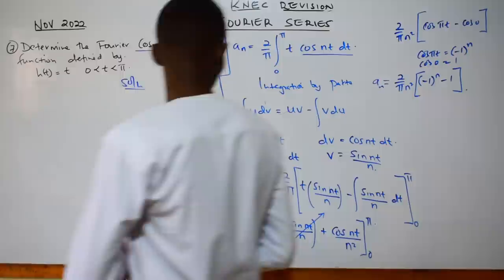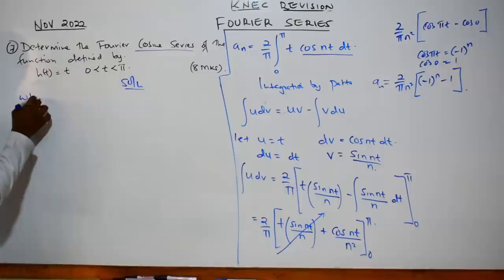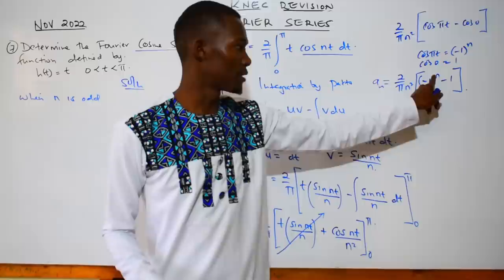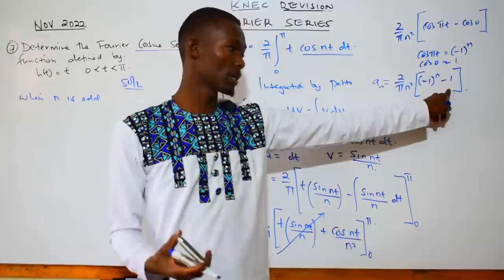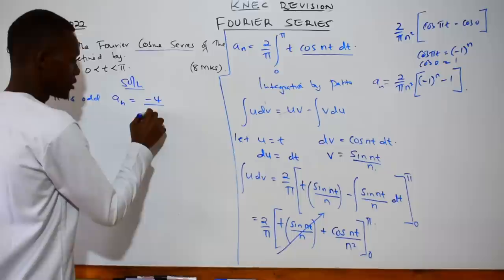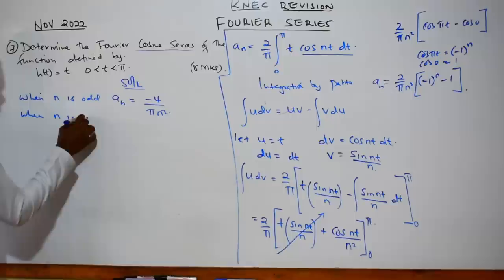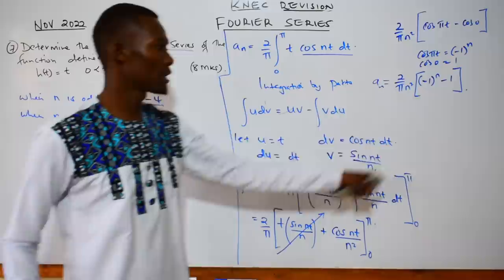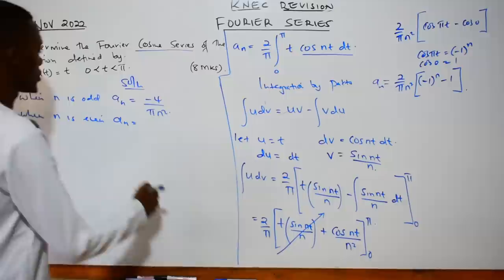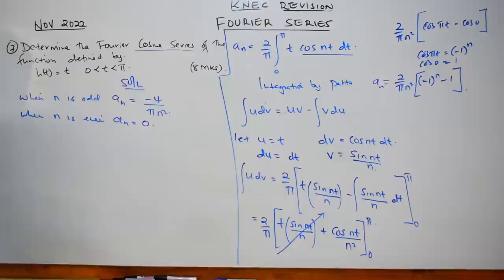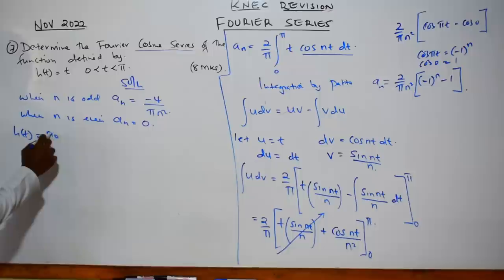When n is odd, for example n=1: (-1)¹ = -1, so -1 - 1 = -2, and -2 times 2 over πn² gives aₙ = -4/(πn²). When n is even, for example n=2: (-1)² = +1, so 1 - 1 = 0, and anything times 0 is 0. So when n is even, aₙ = 0.